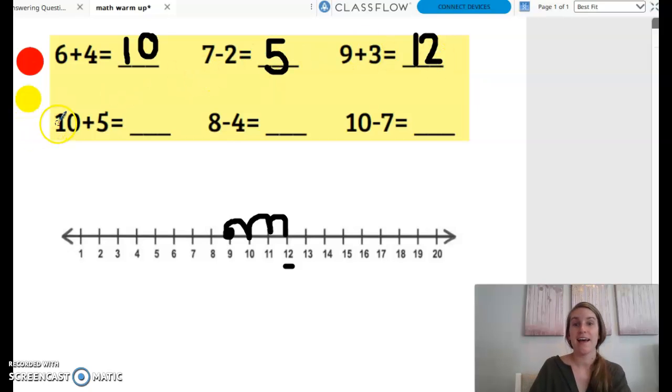Okay, next, 10 plus five. Well, remember the strategy that if we have a multiple of 10 and a one-digit number, that one digit can just go into the ones place. So 10 plus five equals 15.